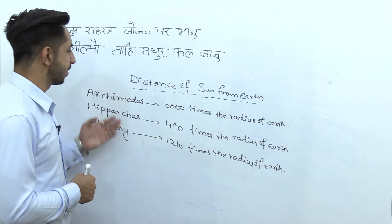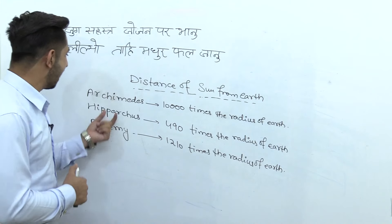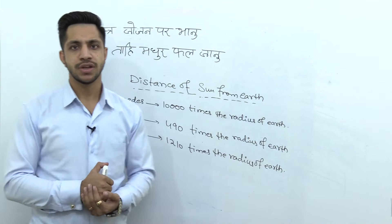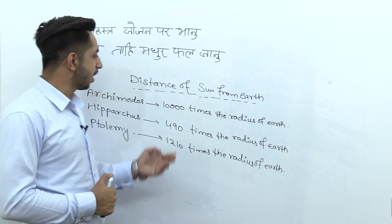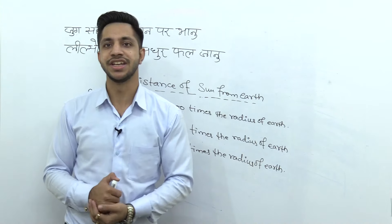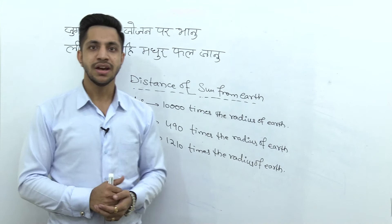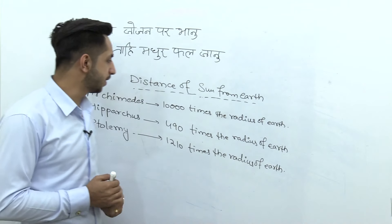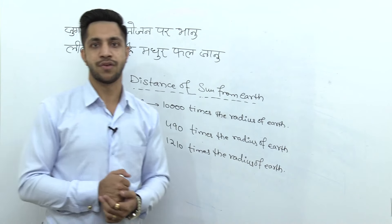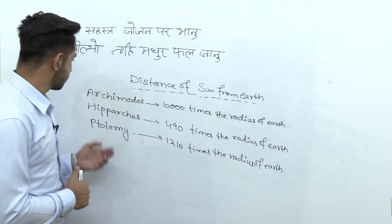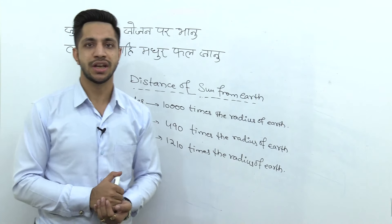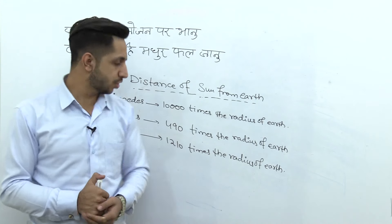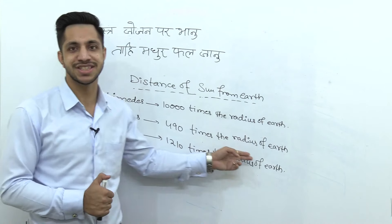Humare paas ek Greek mathematician ya philosopher, Archimedes, unhone kaha tha ki the distance of sun from earth is around 10,000 times the radius of earth — yaane ki earth ke radius ka 10,000 guna. Phir humare paas Hipparchus aaye, unki calculation ne kaha that the distance of sun from earth should be 490 times the radius of earth.